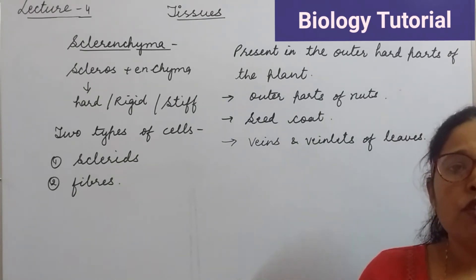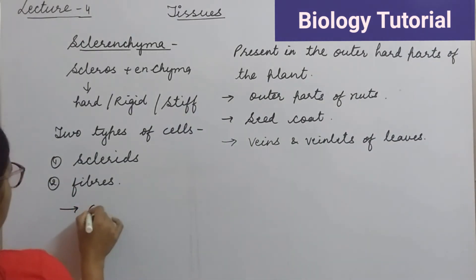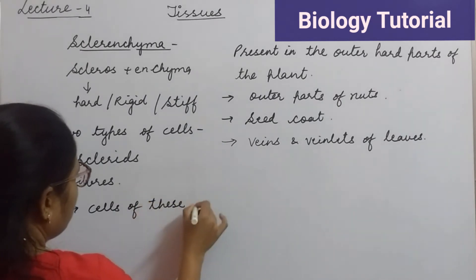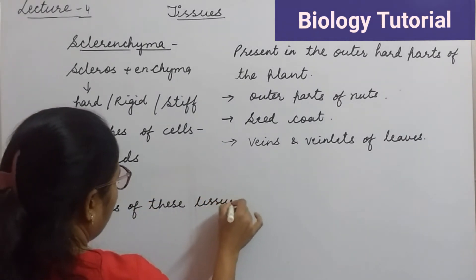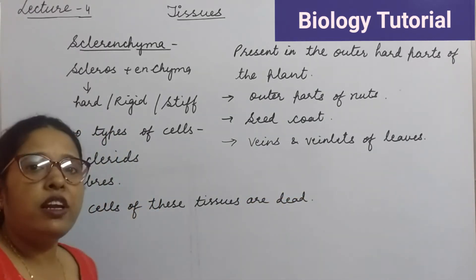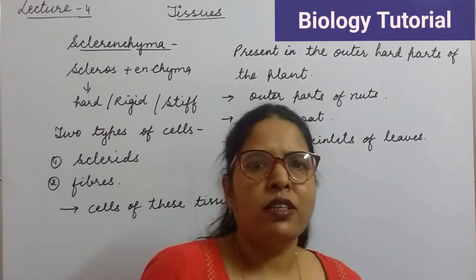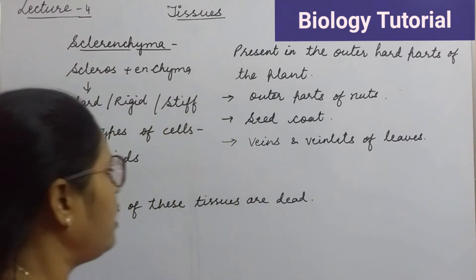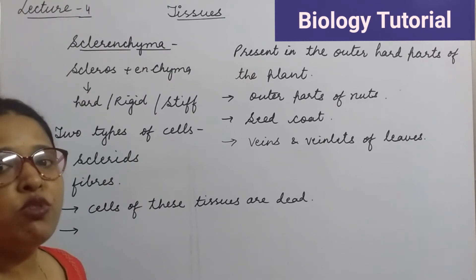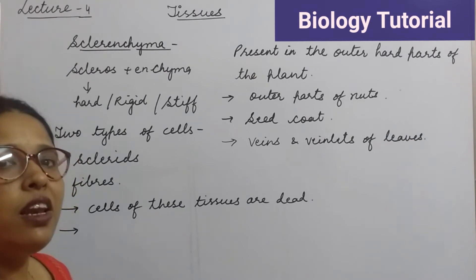The cells of sclerenchyma tissues are dead. These tissues are made up of dead cells.